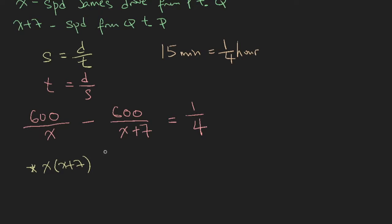So on the left-hand side, when we multiply by x times x plus 7, you will be left with 600 multiplied by x plus 7. The x cancels with the x, and here you will be left with 600x. On the right-hand side, you will be left with x times x plus 7 over 4.